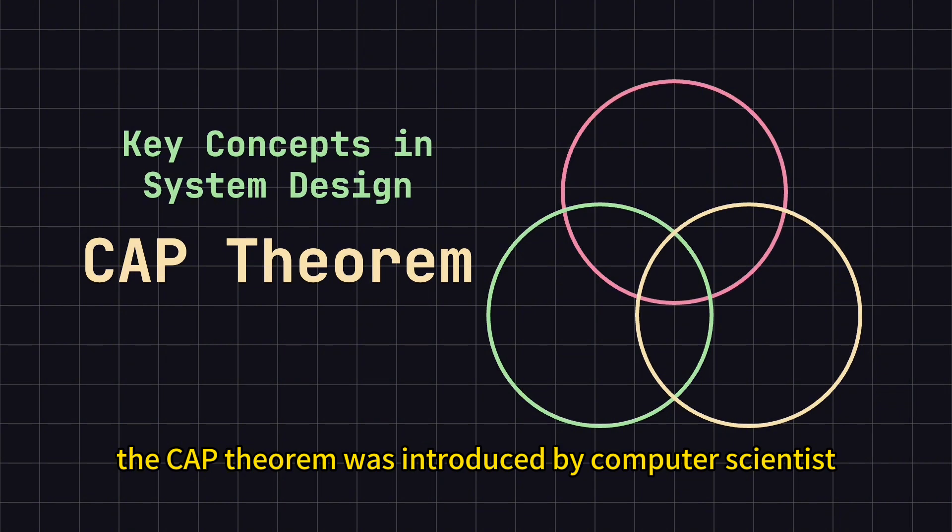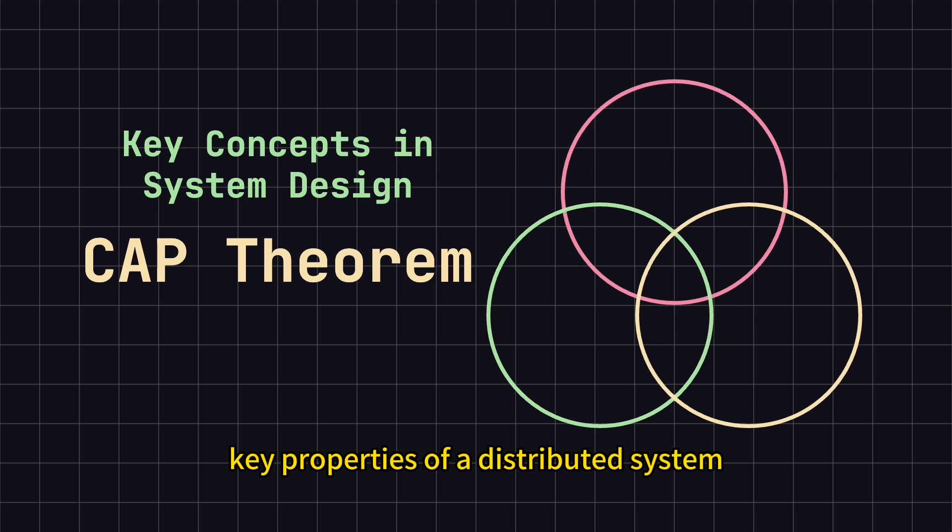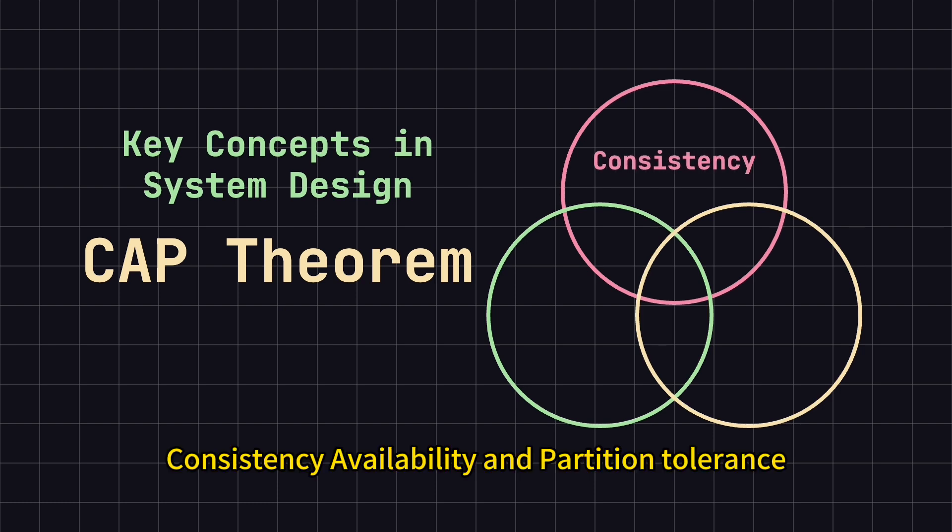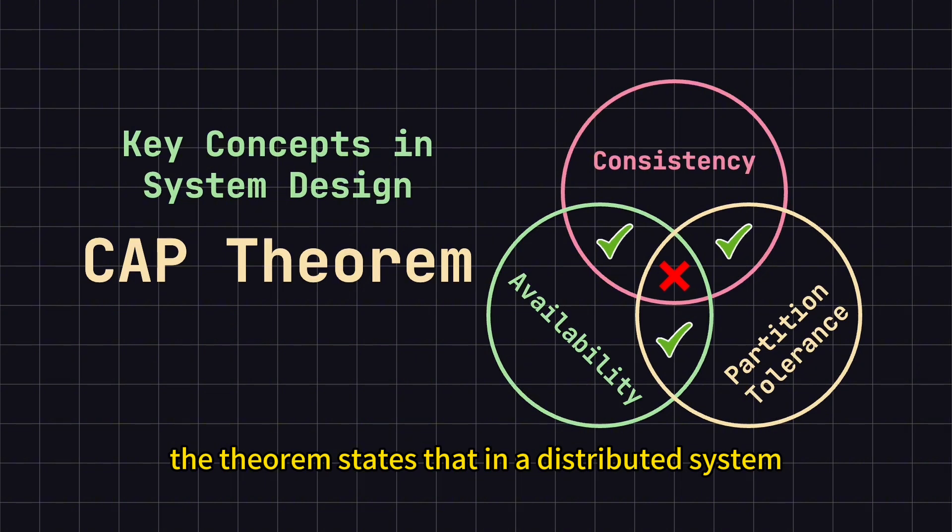The CAP theorem was introduced by computer scientist Eric Brewer in 2000. CAP stands for the three key properties of a distributed system—consistency, availability, and partition tolerance. The theorem states that in a distributed system, it's impossible to fully achieve all three properties simultaneously. You can only pick two.